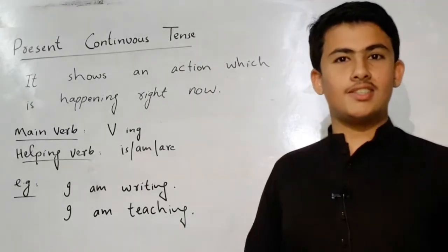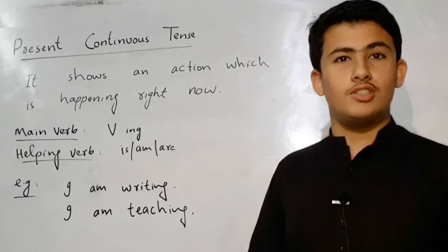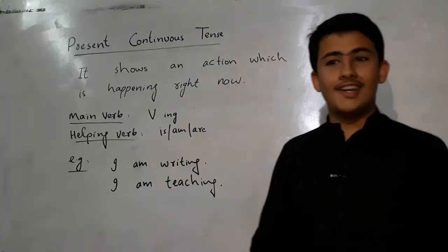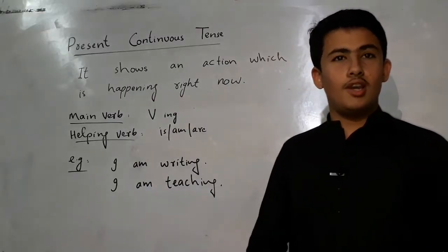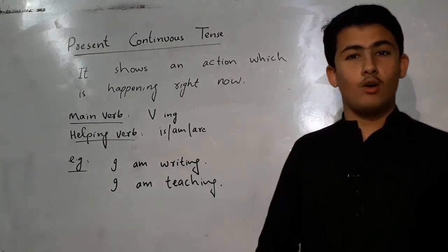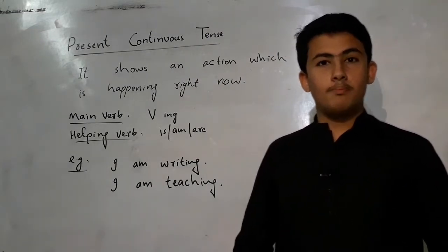It has a lot of rules. For example, it shows an action which is continuous or in progress, and it shows an action which is happening right now but the action is not completed yet.